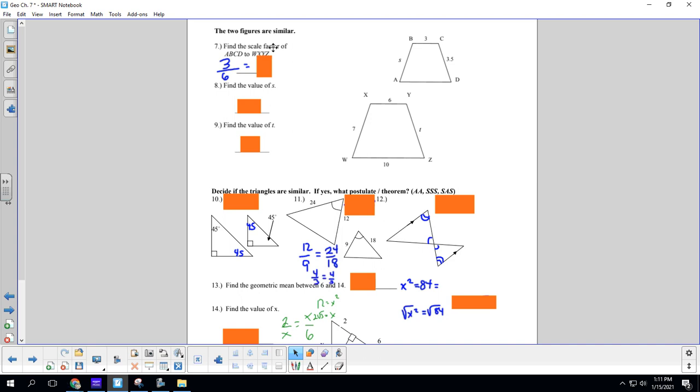Number 7. Find the scale factor of ABCD to WXYZ. So pick any side on ABCD. I'm going to pick 3 and then find its matching side on WXYZ. I'm going to pick 6 because 3 and 6 are matchers. 3 over 6 is equal to 1 half. So our scale factor is 1 half.